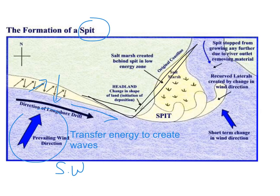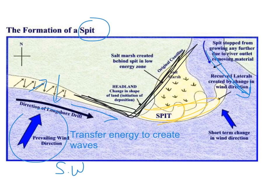Where the coastline changes direction — this is a key feature — the sediment continues to grow outwards from the land. This is what makes a spit, where it grows across a river. The current of the river stops the sand from reaching the other side, and this is what's called a spit.